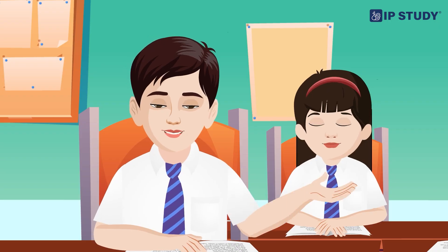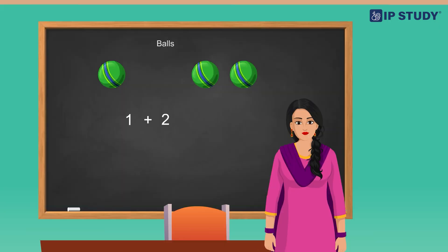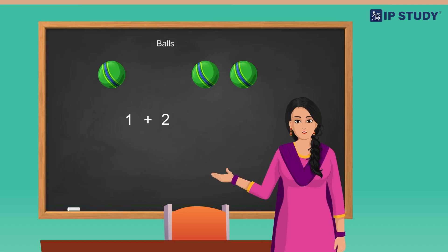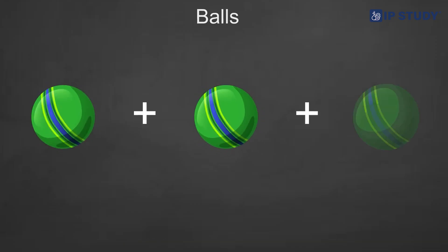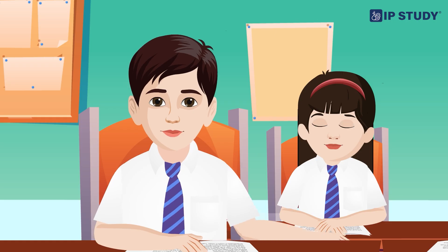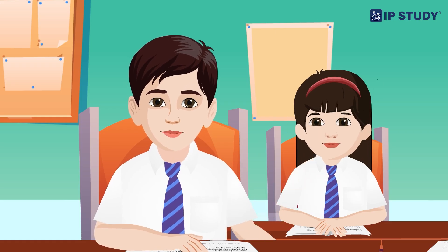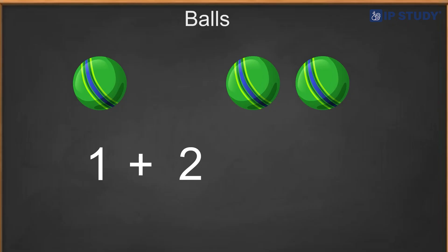Oh, I see. But what does that mean? It means we are putting all the balls together. Let's count them all. Count with me: one ball plus one more ball plus another ball. How many balls do we have all together? I counted three balls. That's right, so one plus two equals three. We write it like this: one plus two is equal to three.